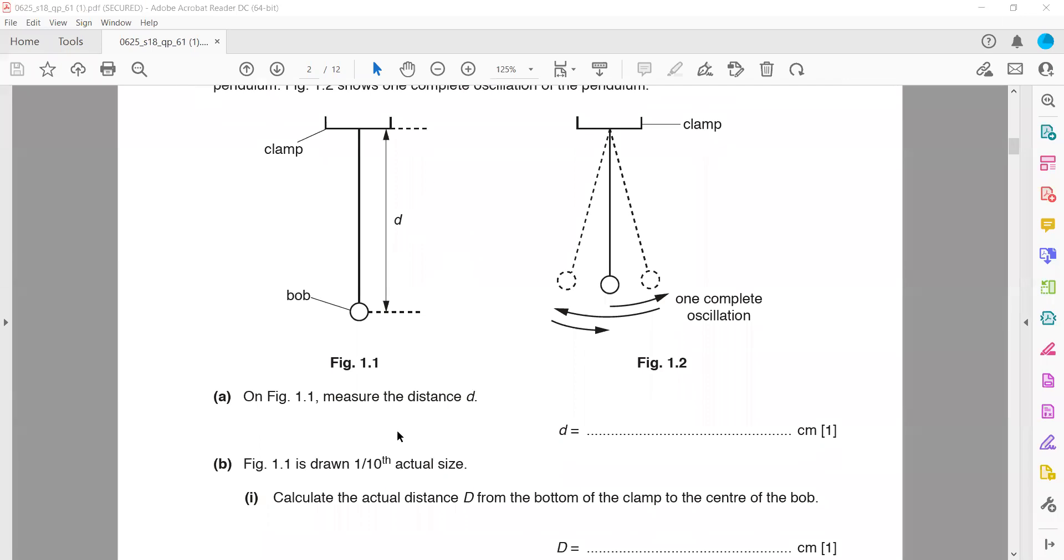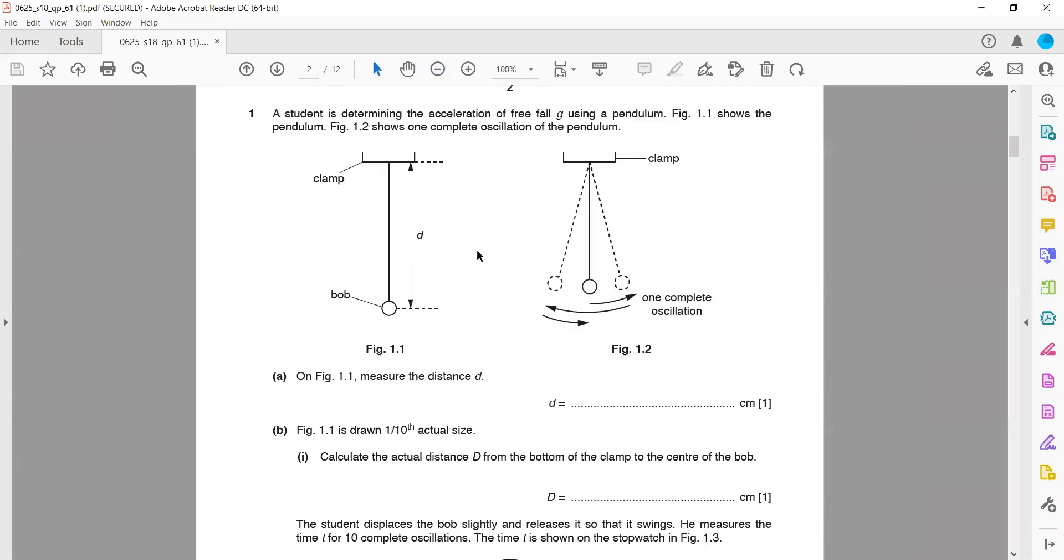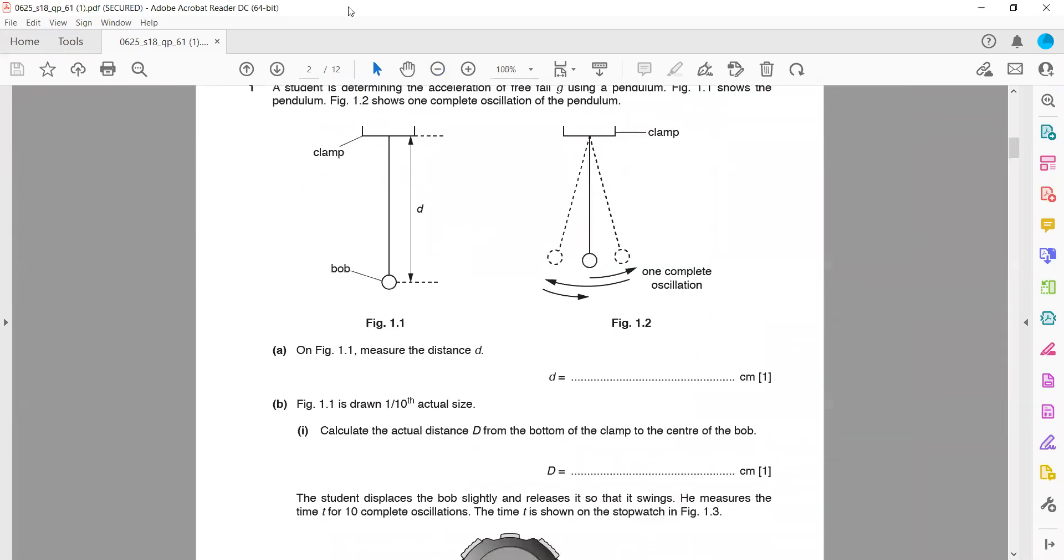On the figure, measure the distance d using a ruler or scale. The measurement is in centimeters, so write in centimeters, don't convert to millimeters. Since it's in centimeters, we must substitute in centimeters. For example, when you measure it is 5, so we write that as 5 centimeters.